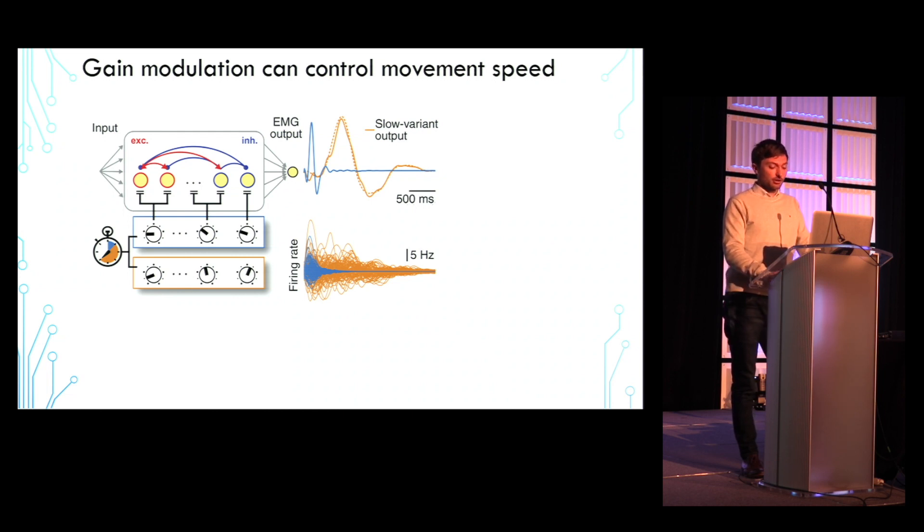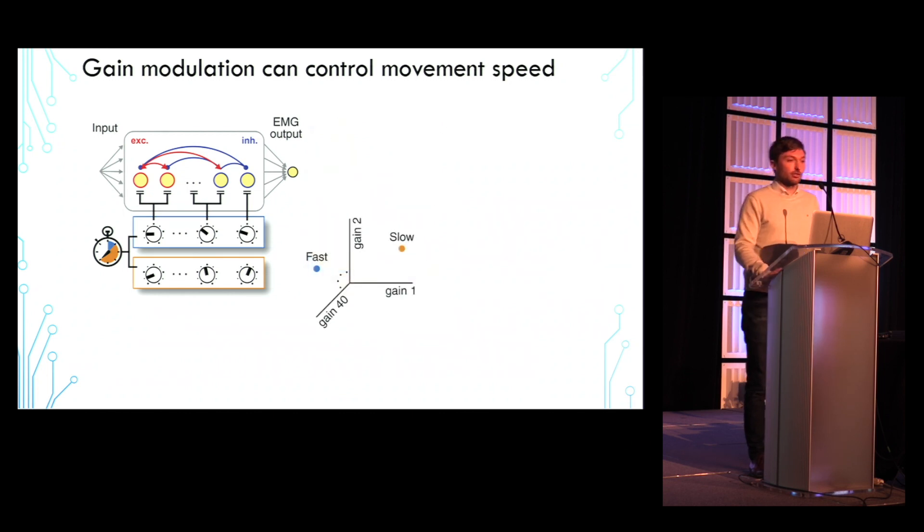We next asked if it is possible to simply linearly interpolate between the learned gain patterns for the fast and slow variants and generate smooth speed control of the movement. To illustrate this...